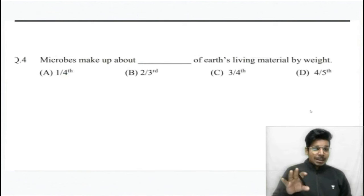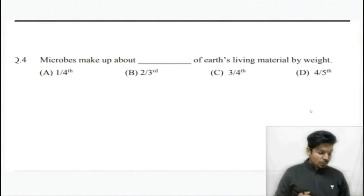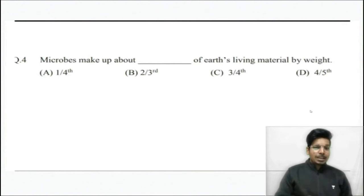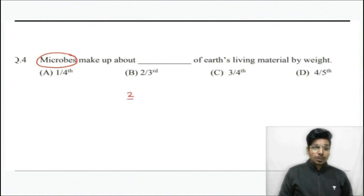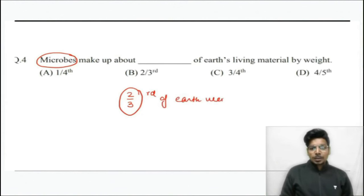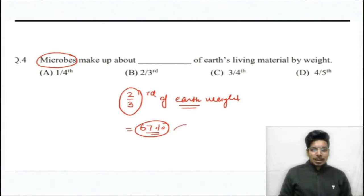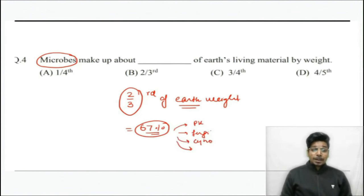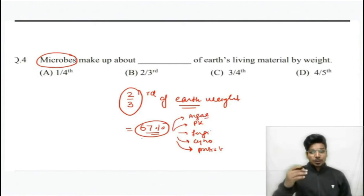Question number four: Microbes make up about how much of Earth's living material? This type of question comes from CSIR and GATE point of view. Microbes are almost two-thirds of the Earth's weight. This includes prokaryotes, fungi, cyanobacteria, protists, algae, and viruses.